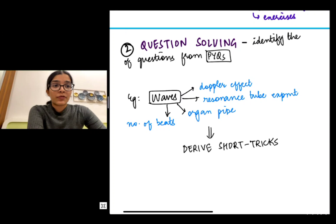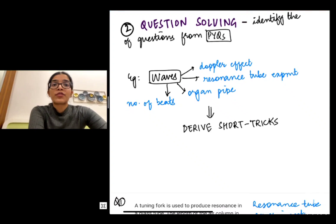So I could divide the chapter waves into four major categories: Doppler's effect, resonance tube experiment, organ pipe and number of beats. After that you derive short tricks or formulas that will help you to solve these questions easily.